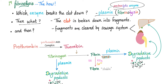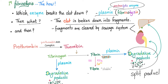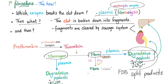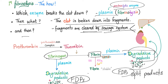After plasmin breaks the clot, the clot is broken down into fragments called fibrin degradation products, also known as split products. You break down fibrin into fibrin degradation products, and you break down fibrinogen into fibrinogen degradation products. These fragments are then cleared by the liver and the kidneys — your sewage system.